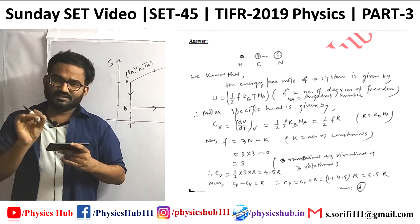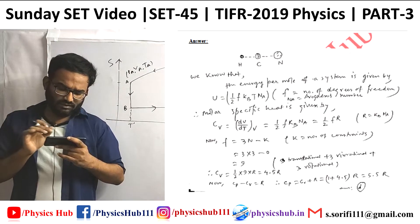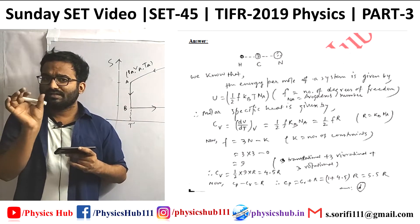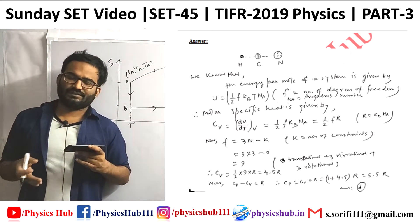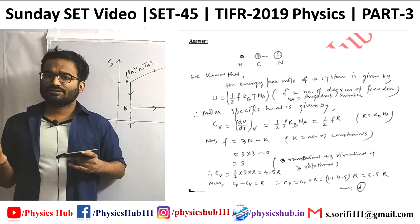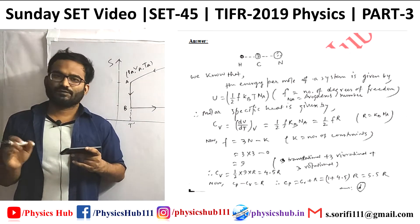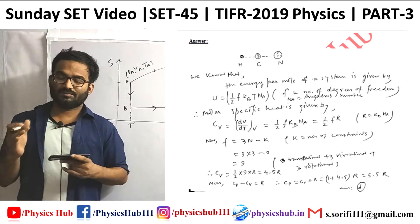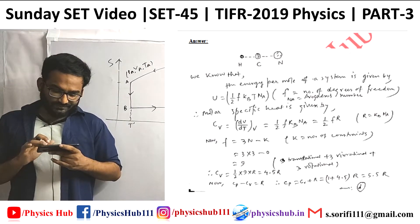For HCN, the three atoms H, C, and N are not tightly bound, so they can vibrate, rotate, and translate — all degrees of freedom are present. Using F = 3N − K with N = 3 atoms and K = 0 constraints, F = 9. Therefore C_V = ½ × 9R = 4.5R. Using C_P = C_V + R gives C_P = 5.5R, matching option D, which is the correct answer.